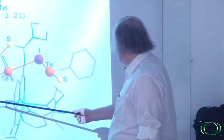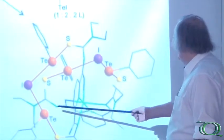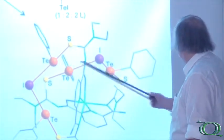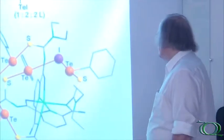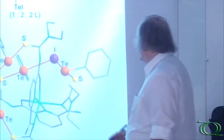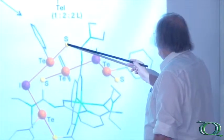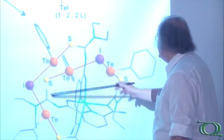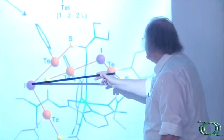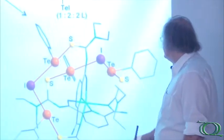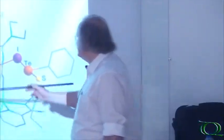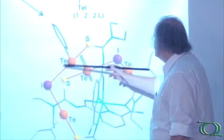We again find tellurium atoms, but this time one, two, three, four of them. And this time four of them is bridging the sulfur atoms of the ligands. But the iodine ligand, the iodido ligand, is remained in the story and it bridges two of the tellurium atoms.